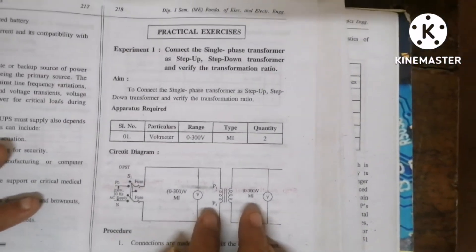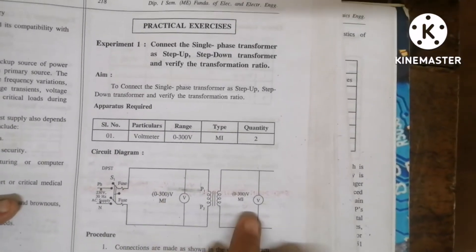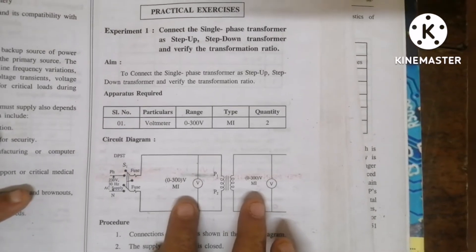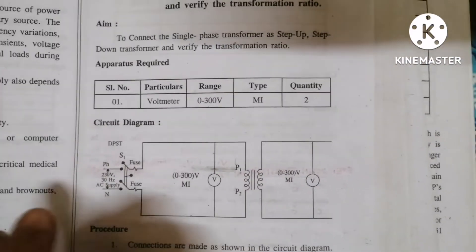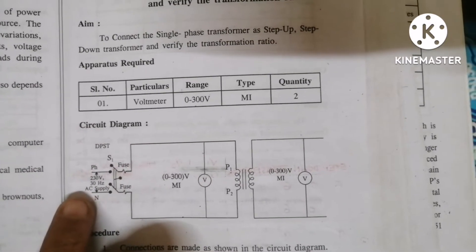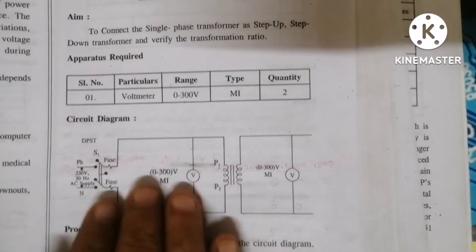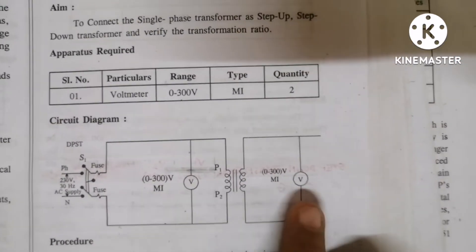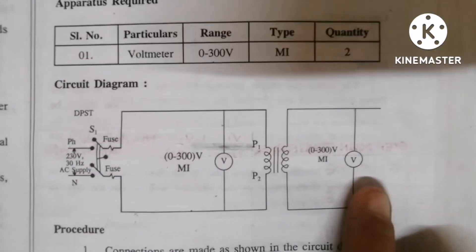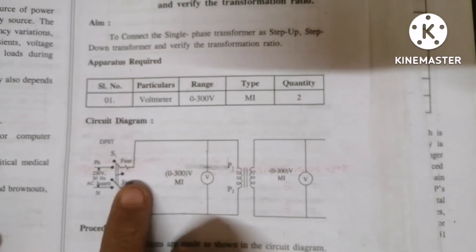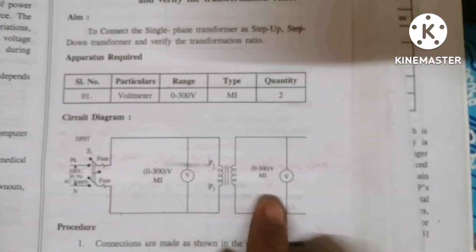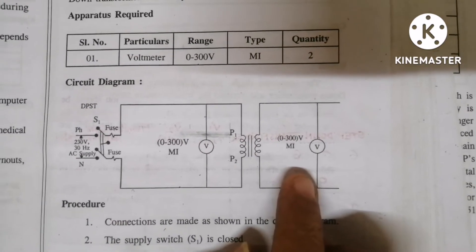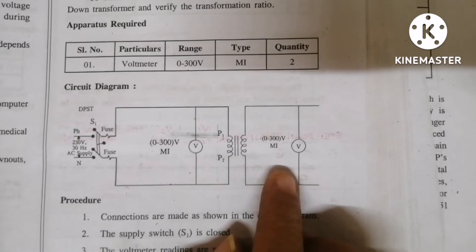As you know, there are two windings in a transformer — one is the primary and the second one is the secondary. For the primary winding we are giving 230 volts supply voltage. Because we are using a step down transformer, the input is greater and the output is lower. If I give 230V as input, I will get outputs according to the transformer windings: 6-0-6, 9-0-9, and 12-0-12.